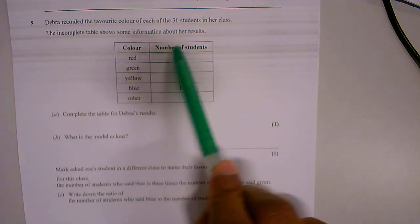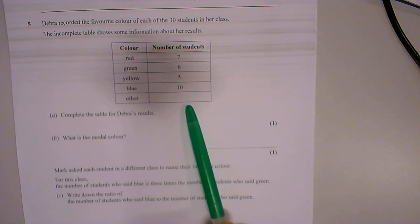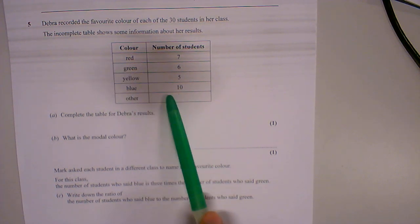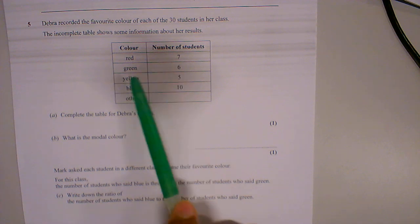So we've got a table, colour, number of students. Incomplete table, so you can see there's a gap here. Red 7, green 6, yellow 5, blue 10. Other is blank.